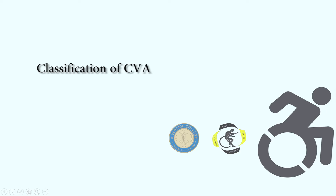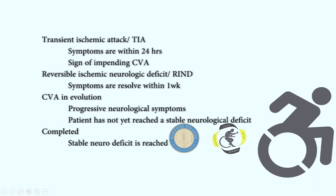There are four classifications of stroke. The first one is TIA, in which the symptoms persist for about 24 hours and is commonly an indicator of impending stroke. The next one is RINE, in which the symptoms last for about a week. Both TIA and RINE return to normal function.